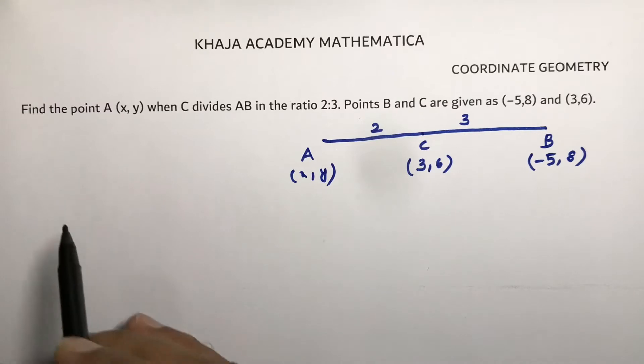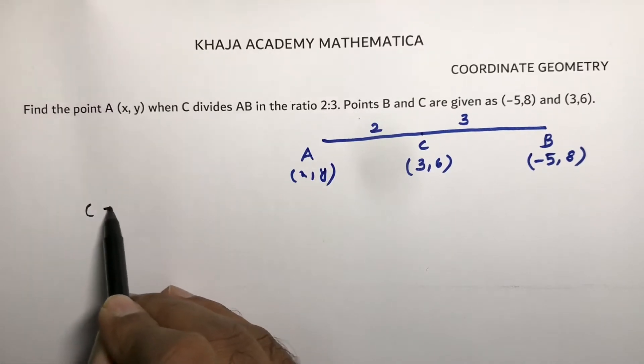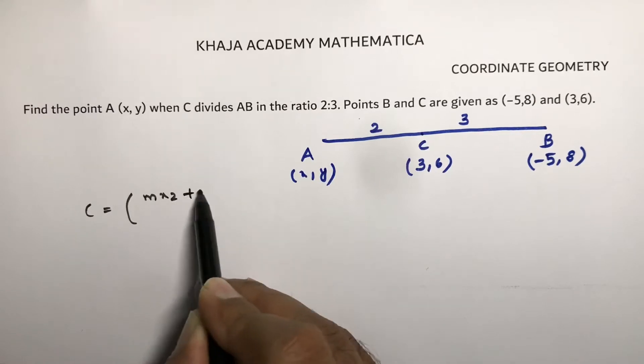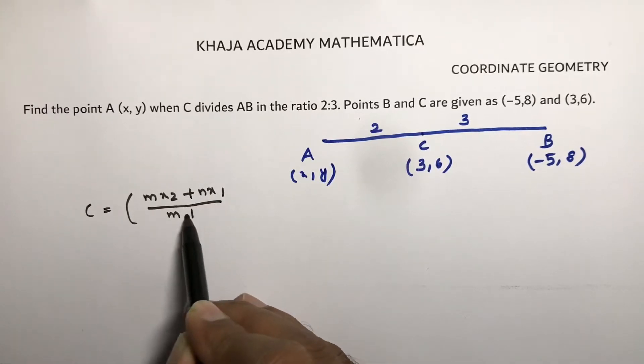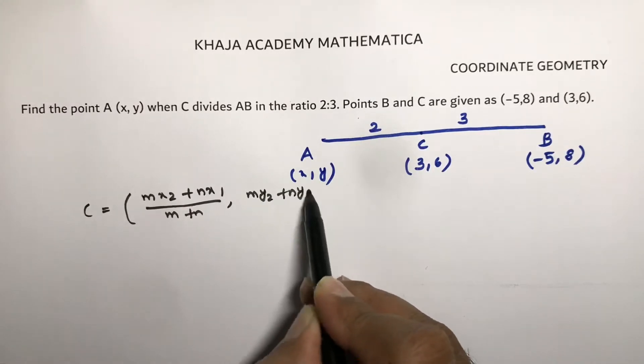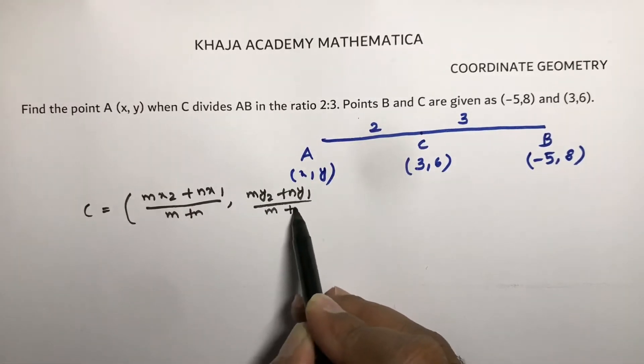So when C is dividing, the ratio formula is C equals M X2 plus N X1 by M plus N, M Y2 plus N Y1 by M plus N.